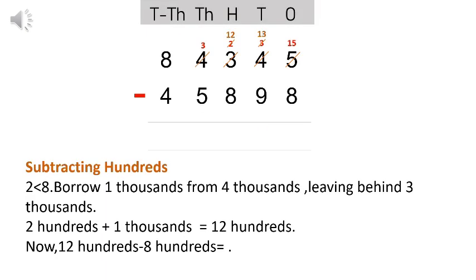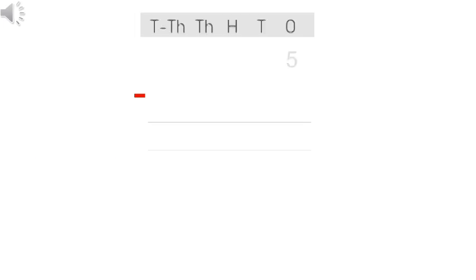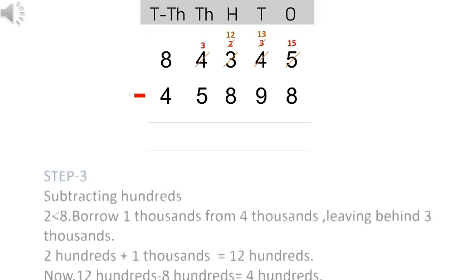Subtracting the hundreds column: two is less than eight, so it needs to borrow one thousand from four thousands, leaving behind three thousands. Two hundreds plus one thousand equals twelve hundreds. Subtracting eight hundreds from twelve hundreds leaves four hundreds. Write four in the hundreds column.